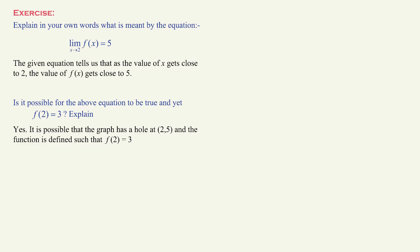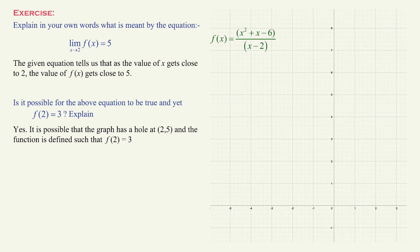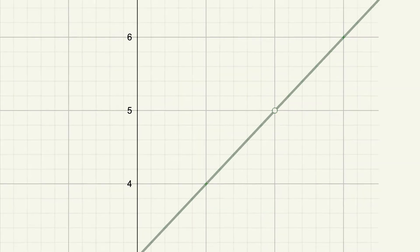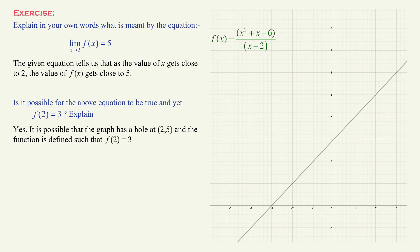Here's an explanation with an example, just to reinforce your intuitive understanding of limits. Let's consider the function f of x equals x squared plus x minus 6, all over x minus 2, which is just one of the infinitely many functions that fit the requirement. This is what the graph looks like — it has a hole here at 2 comma 5. Now, think of part a: as x approaches 2, f of x approaches 5.